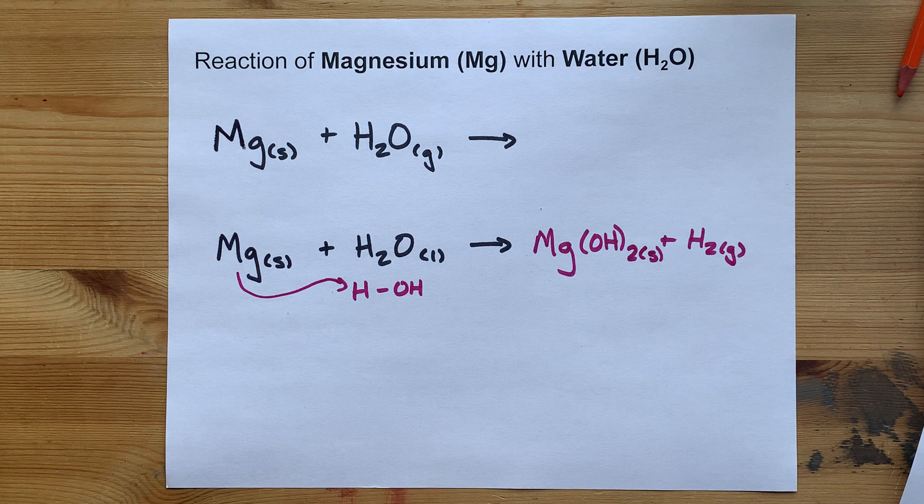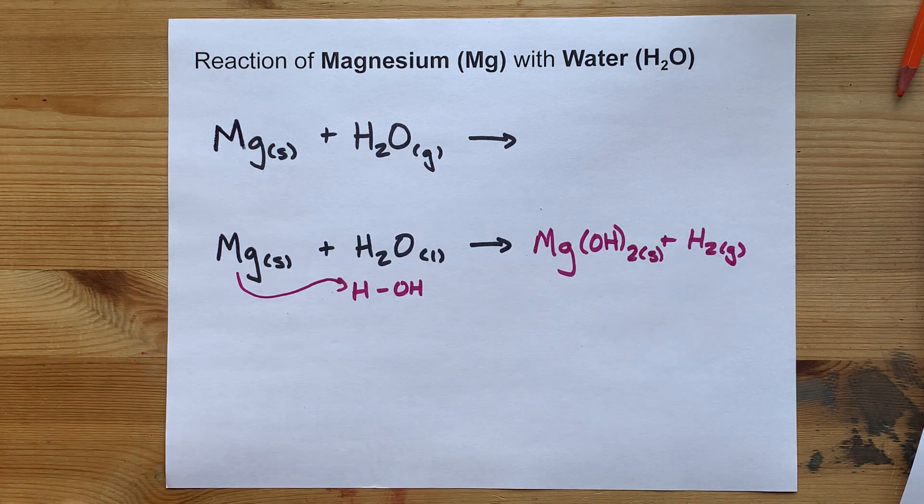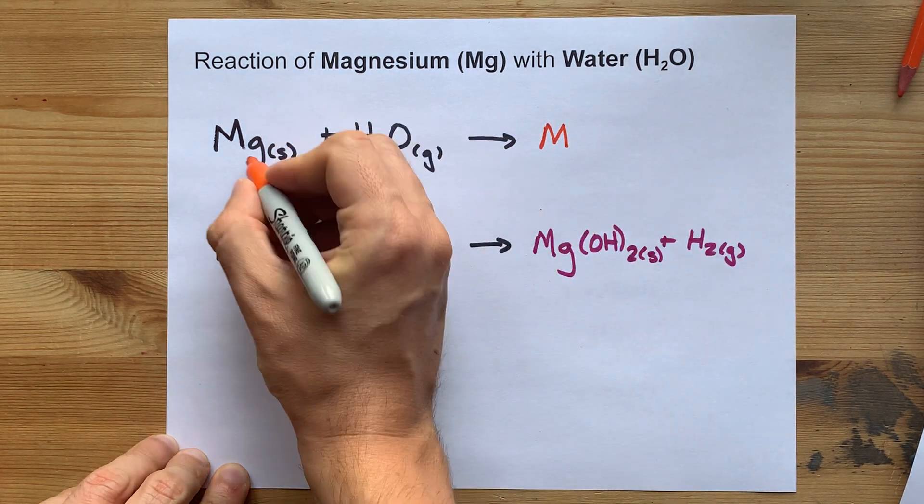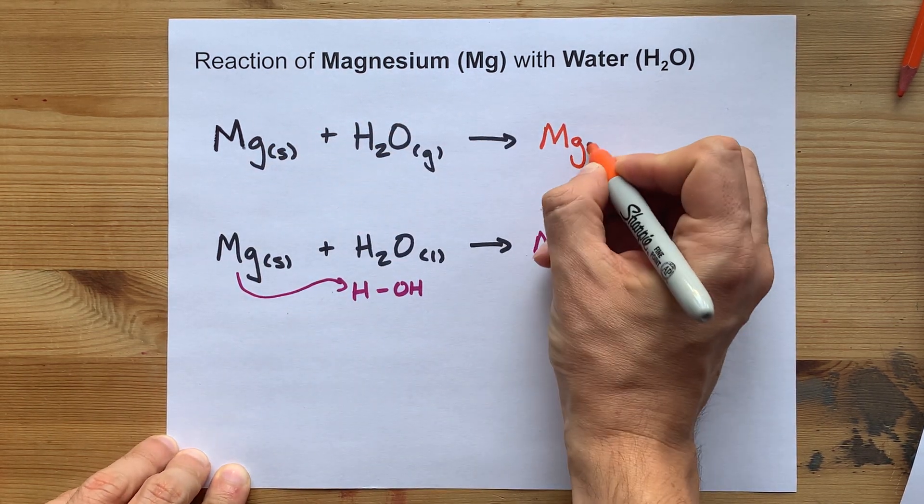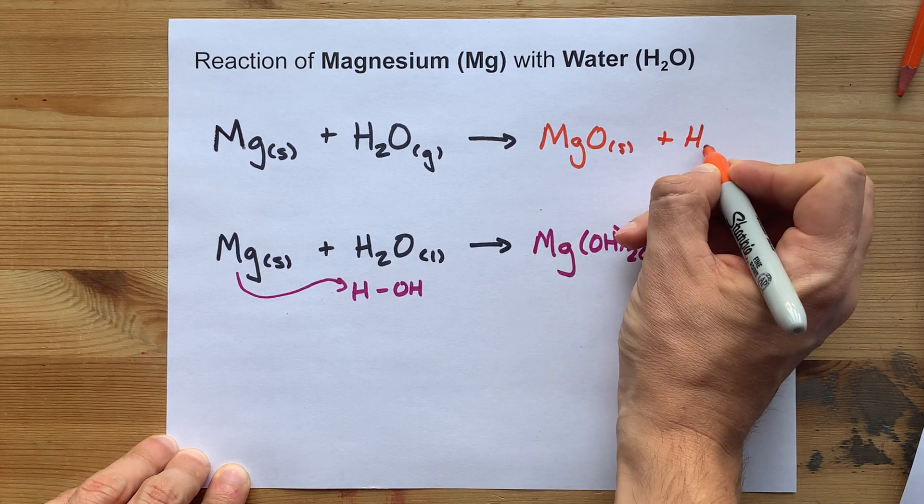What happens if the water is in steam form, on the other hand, is that the magnesium displaces both hydrogens, and you end up with magnesium oxide and hydrogen instead.